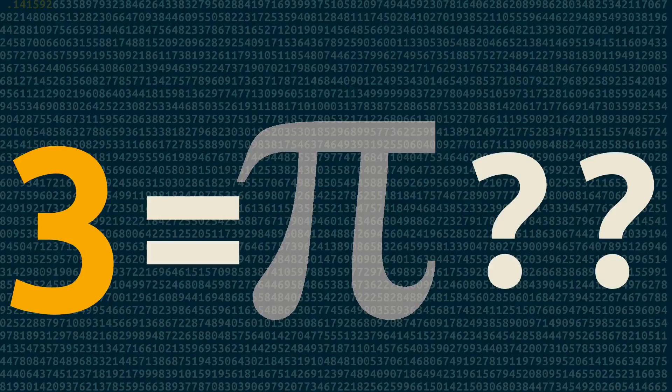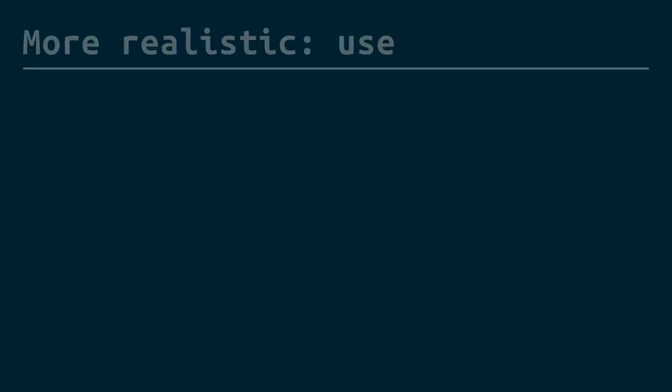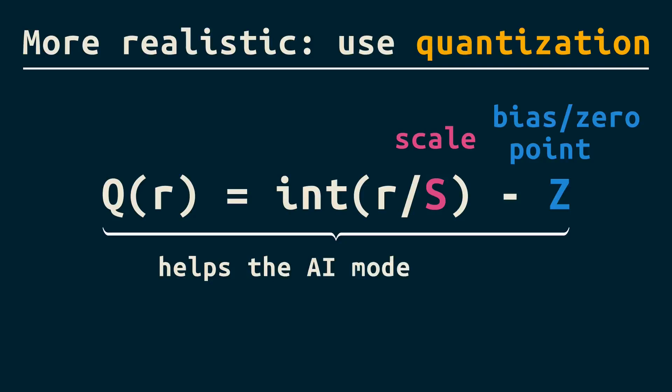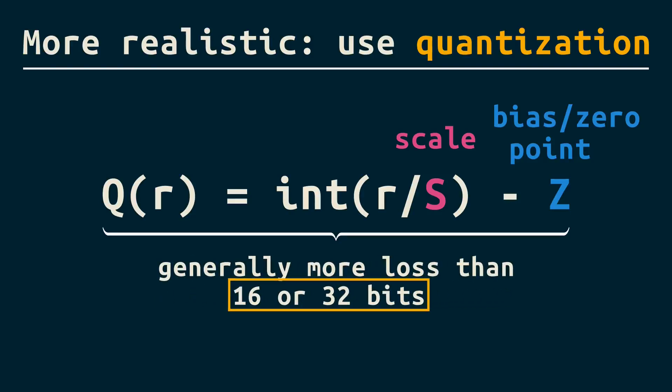Now admittedly, this is a rough simplification. In the real world, various methods of quantization will scale and bias the original numbers down into 8-bits to help the AI model stay accurate with fewer bits. But you're still losing some information, more than you would with 16 or 32-bits, both formats that are also common in AI, just to be clear.